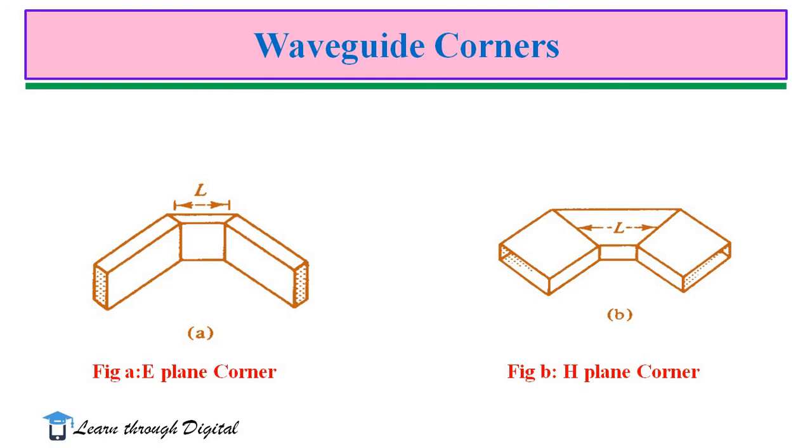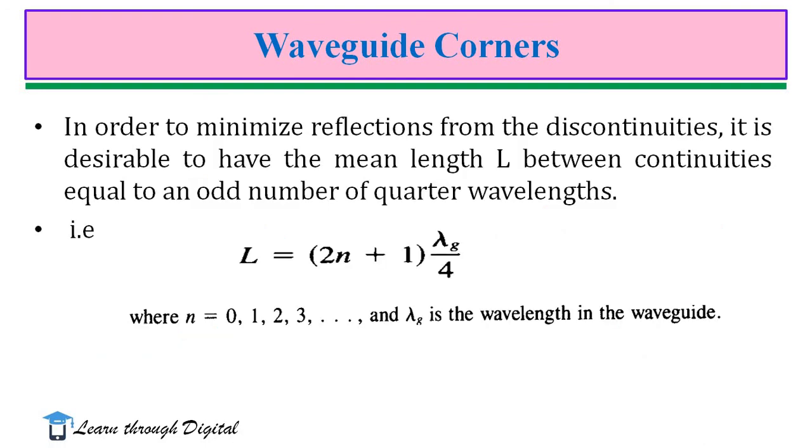Here, a short bend is introduced. In order to minimize reflections from the discontinuities, it is desirable to have the mean length L between the continuities equal to an odd number of quarter wavelengths.